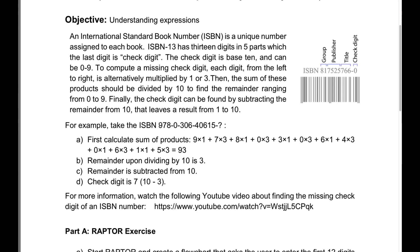That input is going to be an ISBN number — a 12-digit number. The first digit is multiplied by 1, the second digit by 3, the third by 1, the fourth by 3, and it goes like 1, 3, 1, 3, 1, 3. When you add them all together for this example number it gives us 93. When we divide 93 by 10, the remainder is 3, and then we subtract that remainder from 10: 10 minus 3 gives us 7. That's what we have to program.